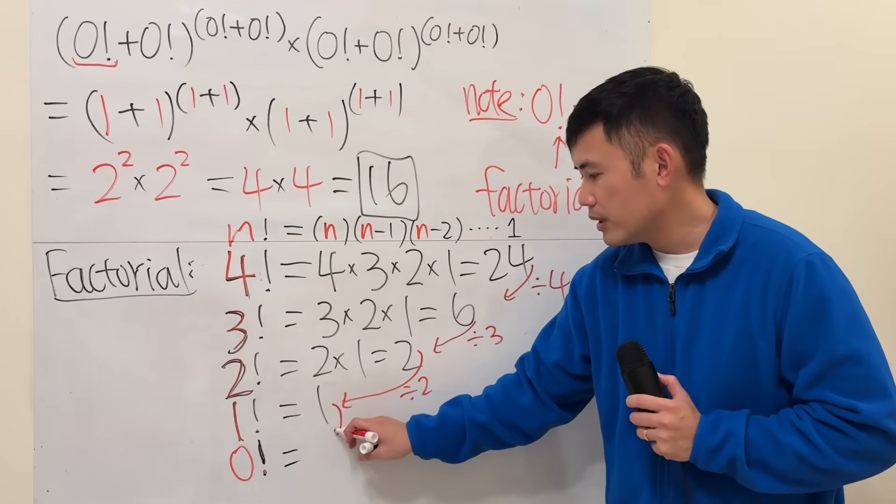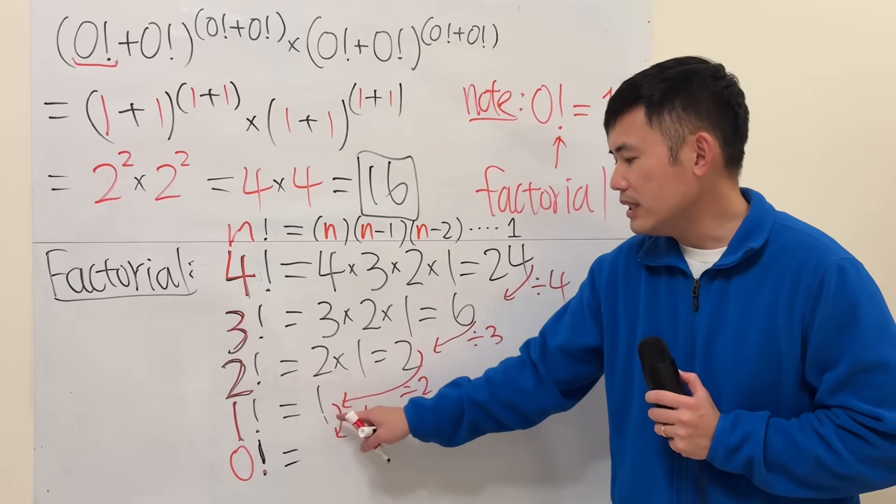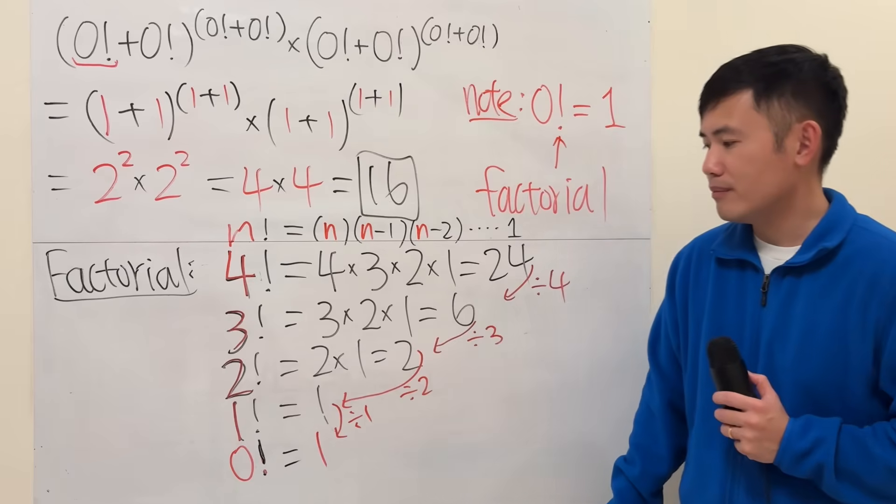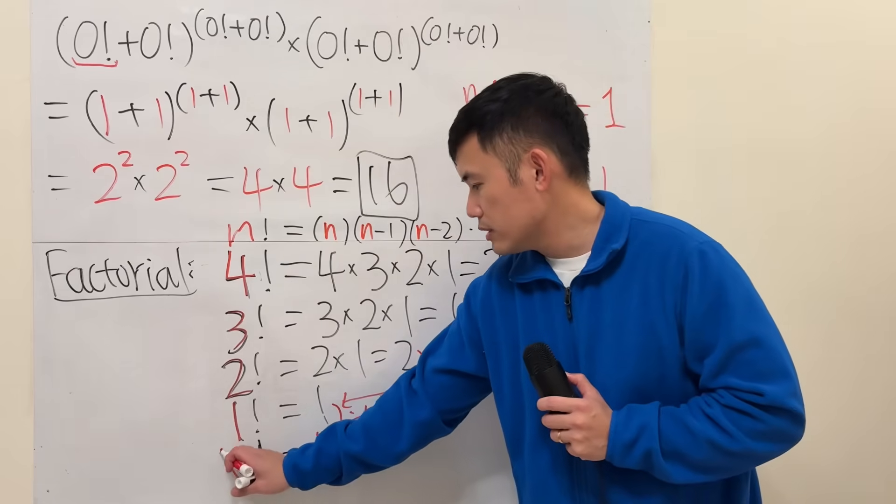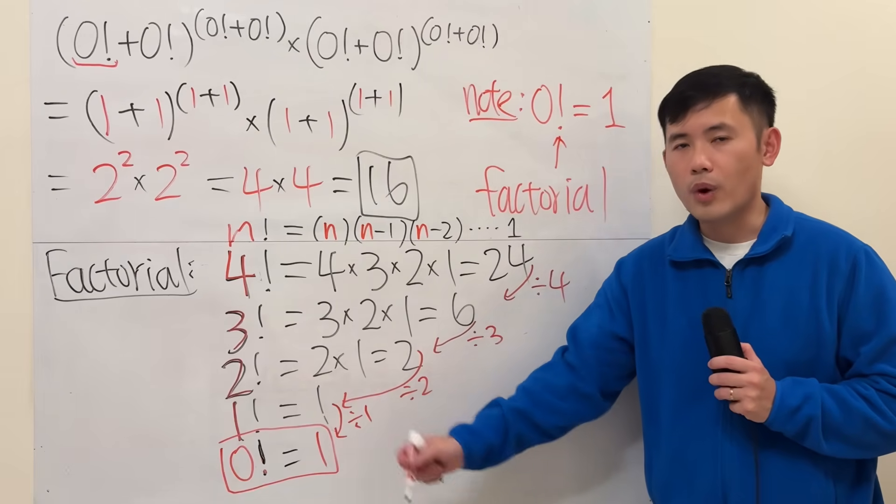Following the same pattern, what do we do next? Divide by 1. 1 divided by 1 is 1. There you go, this is why we define 0 factorial to be equal to 1.